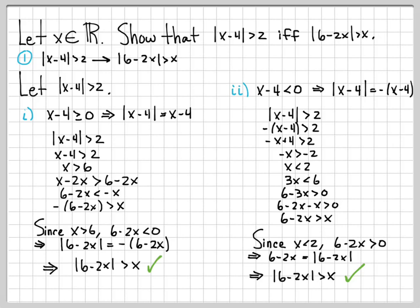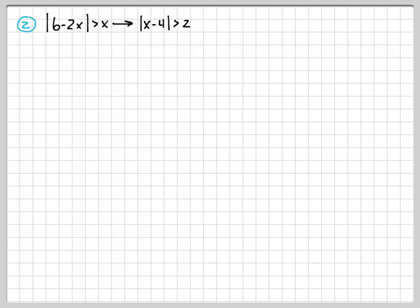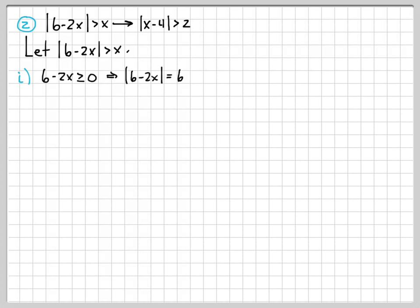So we've completed part 1 of this proof: we showed that the absolute value of x minus 4 greater than 2 implies the absolute value of 6 minus 2x being greater than x, handling both subcases for the absolute value. Now for part 2, we need to show that the absolute value of 6 minus 2x being greater than x implies the absolute value of x minus 4 is greater than 2. We assume the absolute value of 6 minus 2x is greater than x, and again break it into subcases. First, we assume 6 minus 2x is greater than or equal to 0, so we can replace the absolute value with just 6 minus 2x.